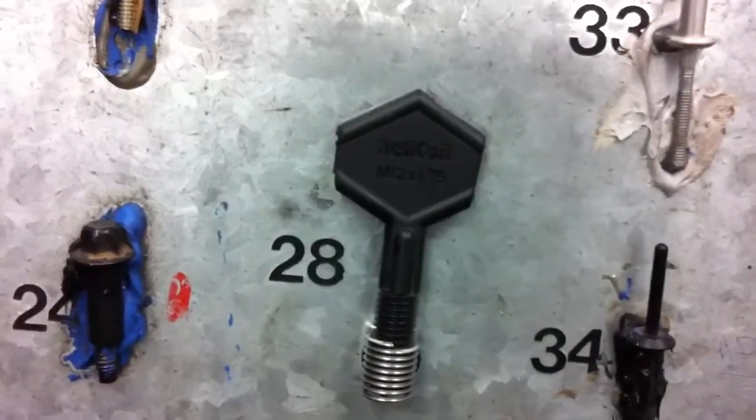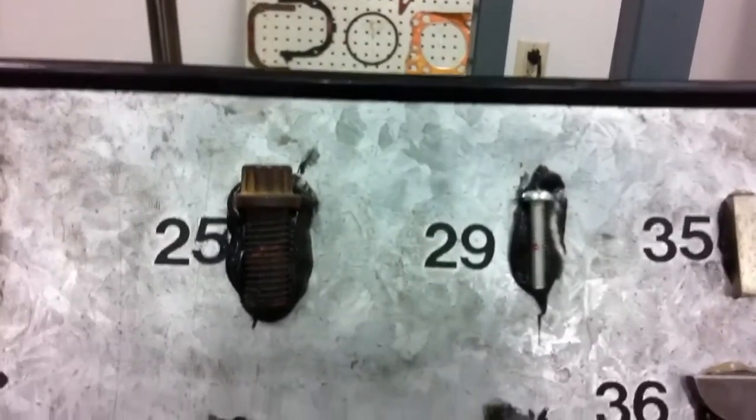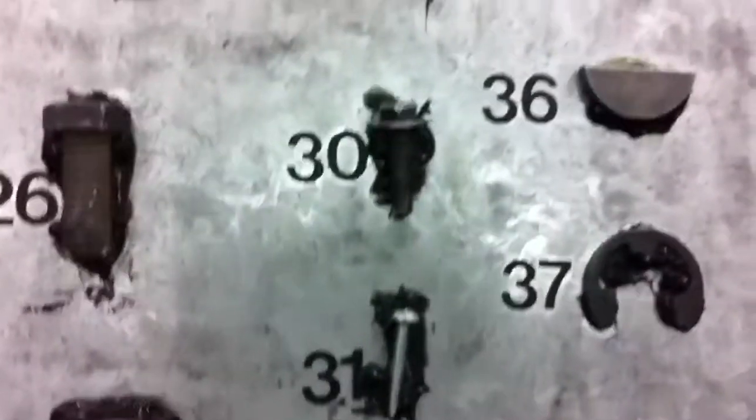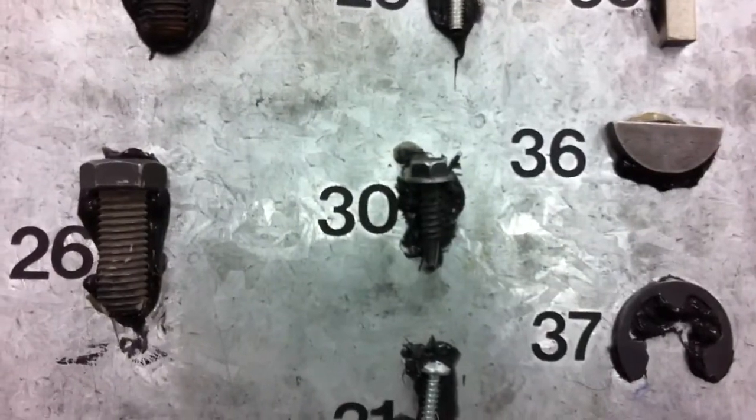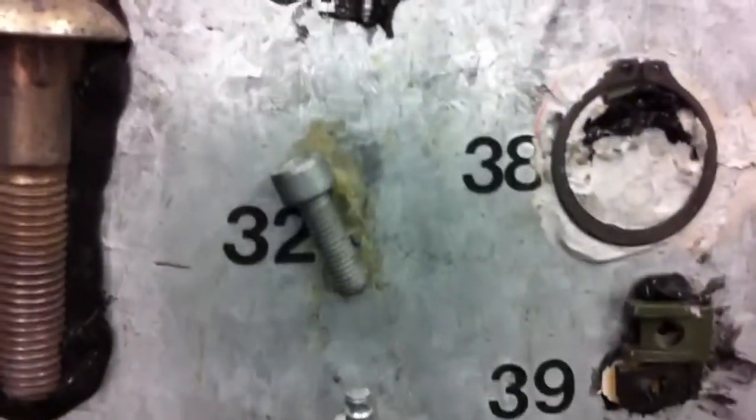Number twenty-eight is a thread insert. Number twenty-nine is a round head machine screw. Number thirty is a self-tapping. Number thirty-one is a self-threading. Thirty-two,